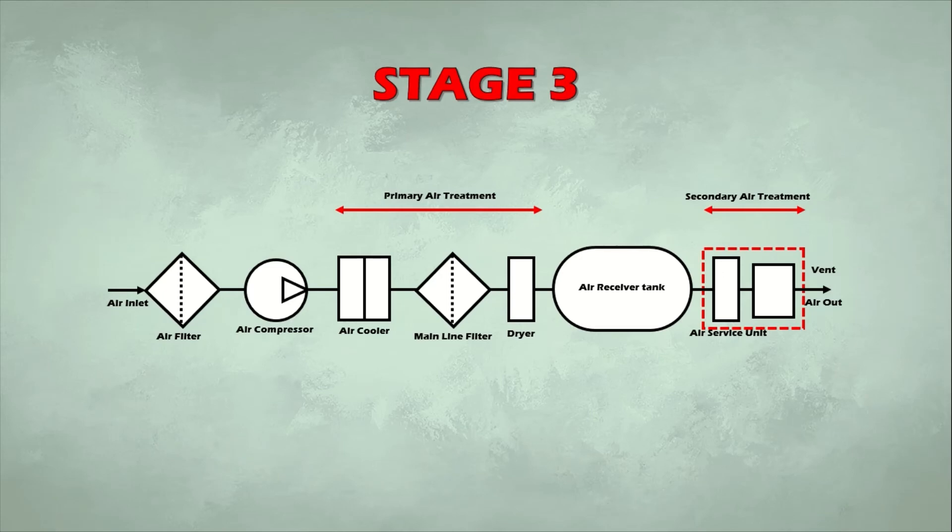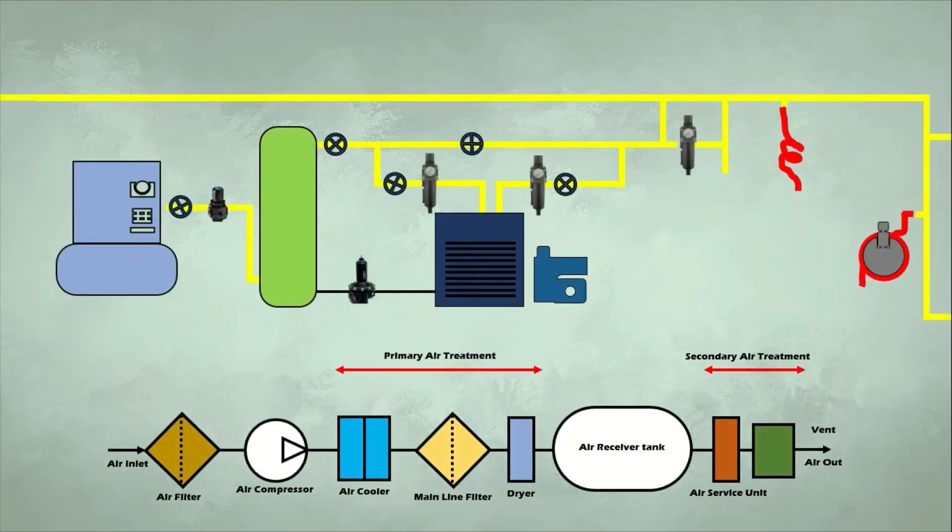In the third stage, the secondary air treatment process, further filtering is carried out. A lubricator introduces a fine mist of oil into the compressed air, which helps lubricate the moving components of the system to which the compressed air will be applied.